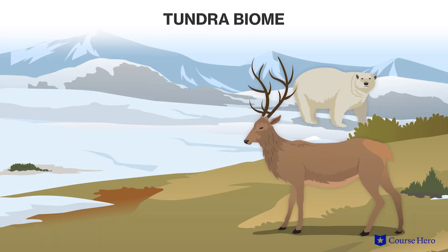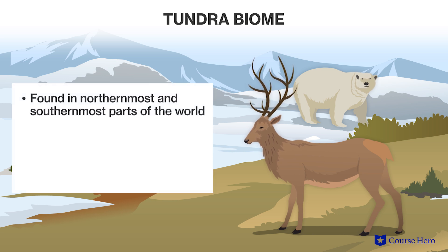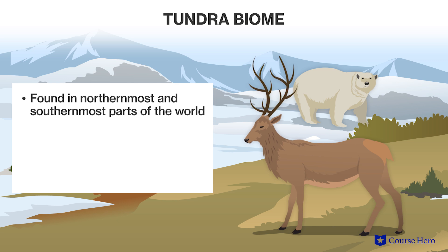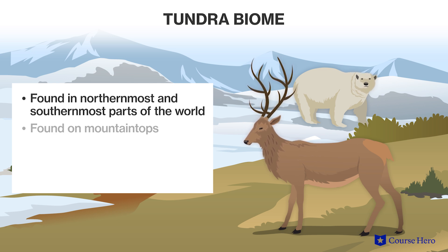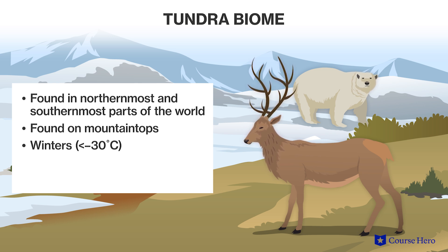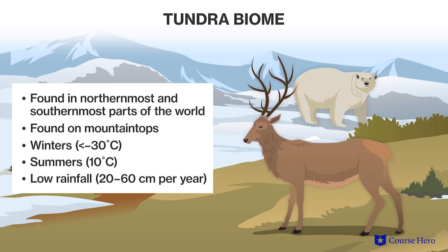The last biome we're going to look at today is the tundra. The tundra biome can be found in the northernmost and southernmost parts of the world, covering expansive areas of the Arctic between the taiga and polar ice. Parts of Antarctica in the south also qualify as tundra, but this biome is mostly considered a desert due to its lack of rainfall. Tundra is also found on mountaintops, such as the top of Mount Kilimanjaro. This biome is characterized by cold winters with average temperatures falling below minus 30 degrees Celsius and cold summers with average temperatures of 10 degrees Celsius. There is very little precipitation, only 20 to 60 centimeters of rain a year, and much of what falls freezes on the ground.